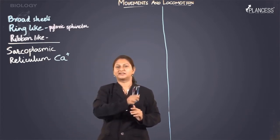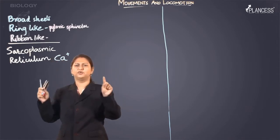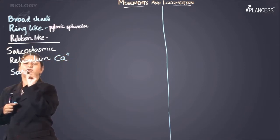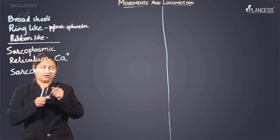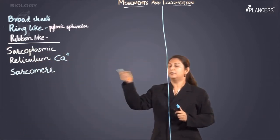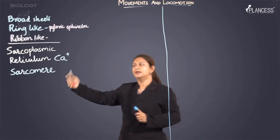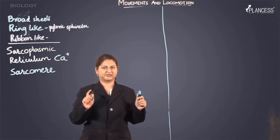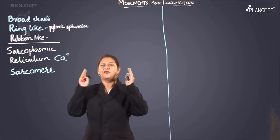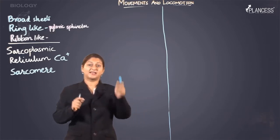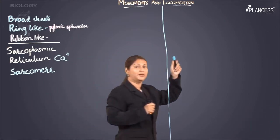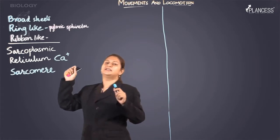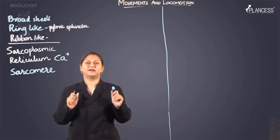We need to understand a typical structure of one unit of the muscular system, which is called the sarcomere. When asked what is the structural and functional unit of a muscular system, the answer is the sarcomere. The sarcomere has a very distinct appearance, depicting one unit of a striated muscle, as seen in the first diagram where skeletal or striated muscles were introduced.